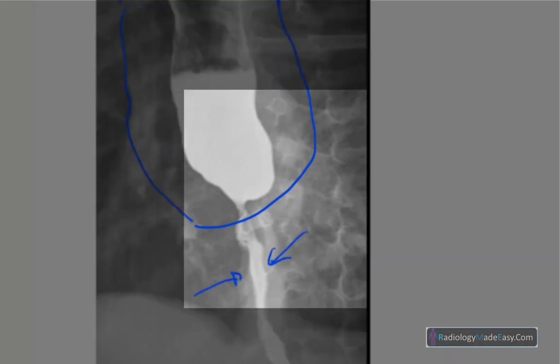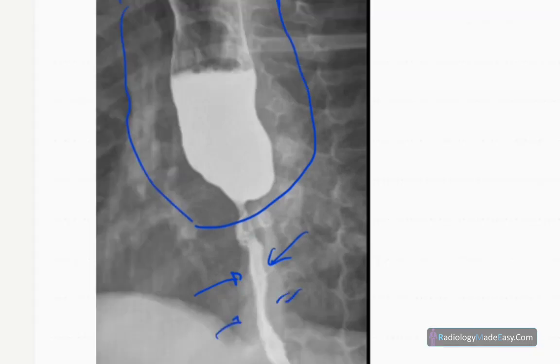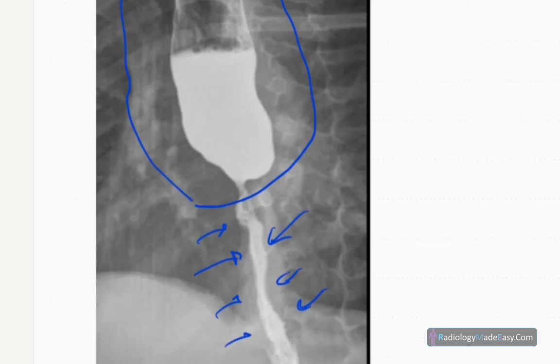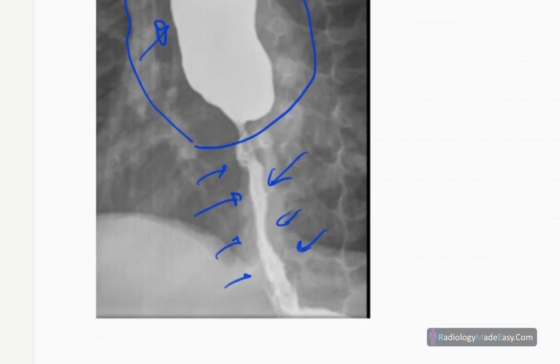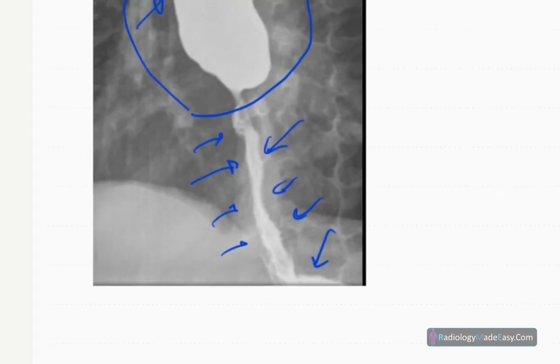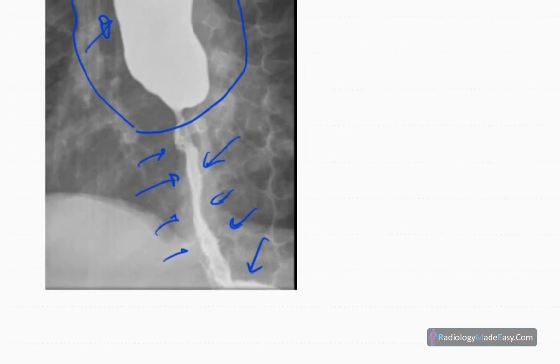There's concentric narrowing and the walls are smooth, and partial hold-up of contrast in here. Some passage of contrast you can see into the distal part here and also through the narrowed lumen, so there's partial obstruction.